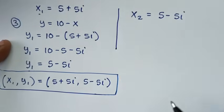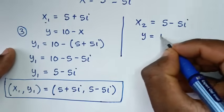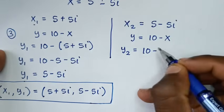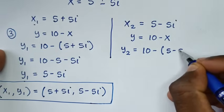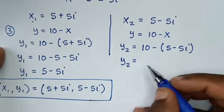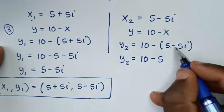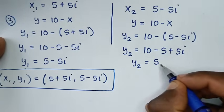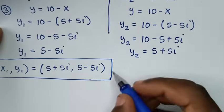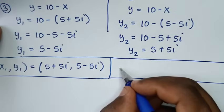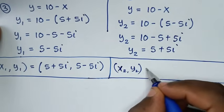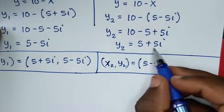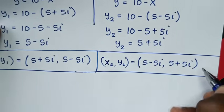For the second solution, we recall equation 3: y is equal to 10 minus x. So y₂ is equal to 10 minus x₂, which is 10 minus (5 minus 5i). So y₂ equals 10 minus 5 plus 5i, which is 5 plus 5i. The second solution is x₂, y₂ equal to (5 minus 5i, 5 plus 5i).